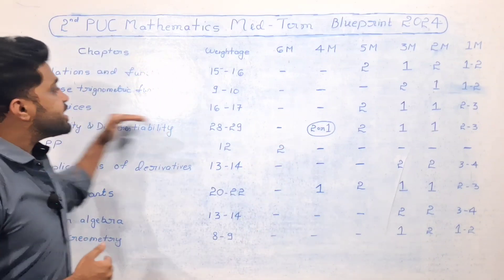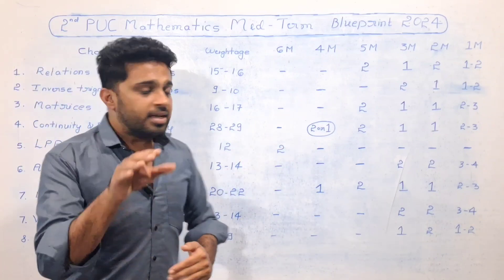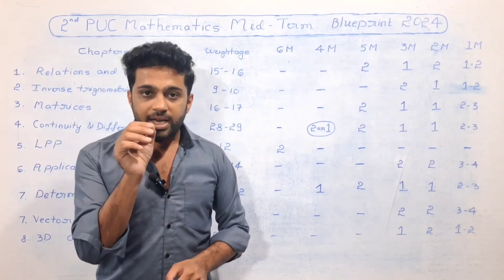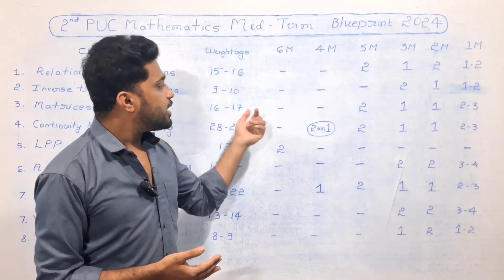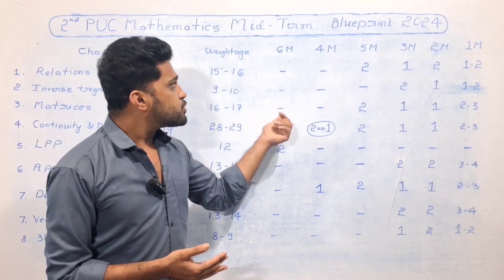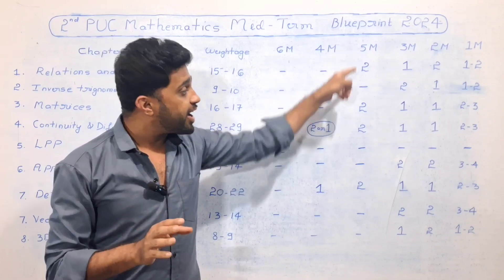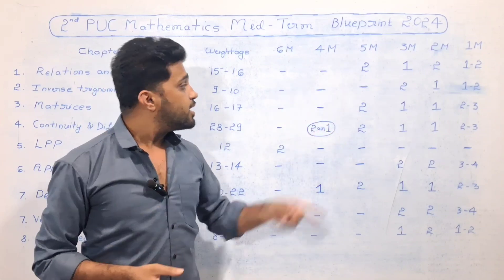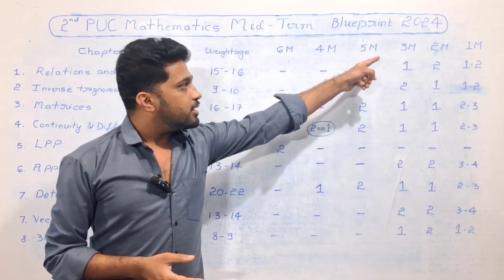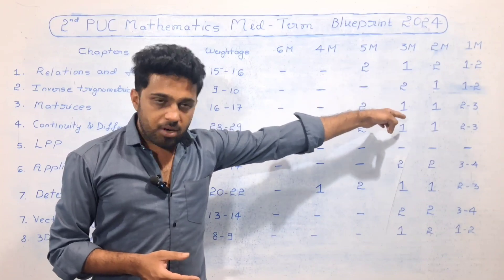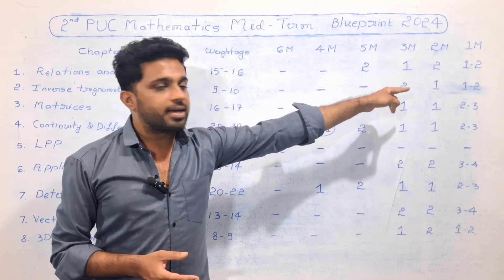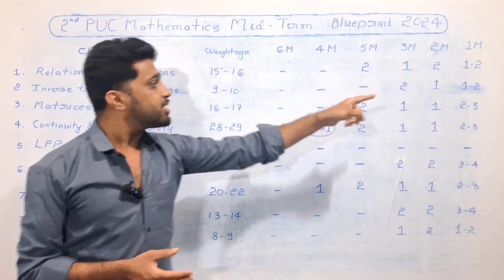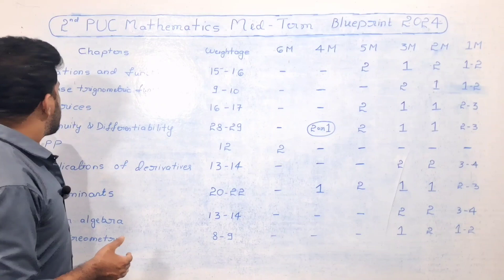The next chapter is Matrices. The Matrices chapter carries 16 to 17 marks in the mid-term exam. There are 6-mark, 4-mark, 5-mark, 3-mark, 2-mark, and 1-mark questions all from the Matrices chapter.